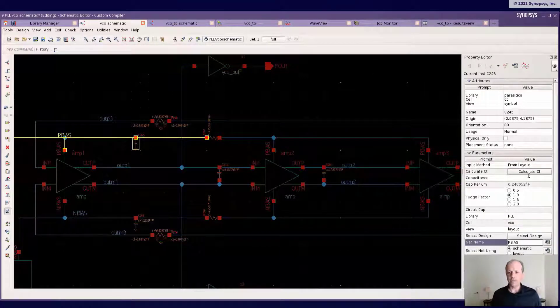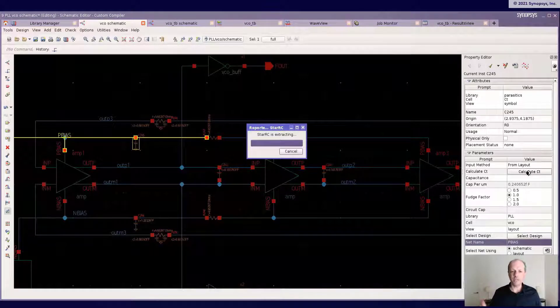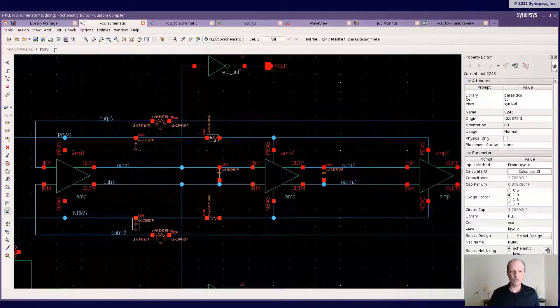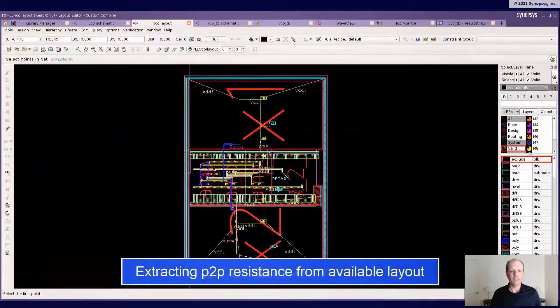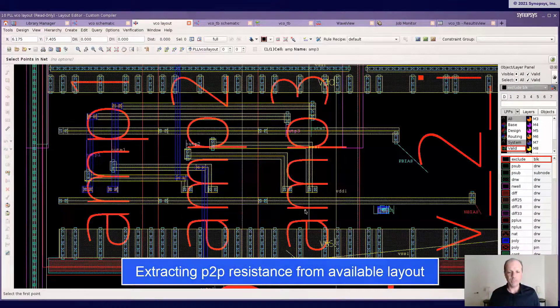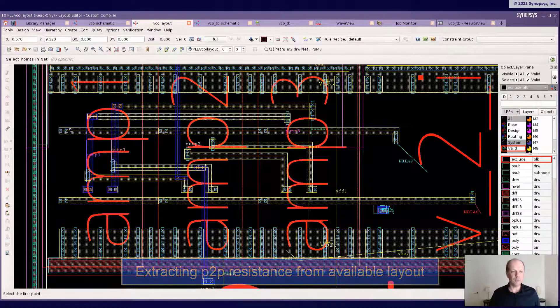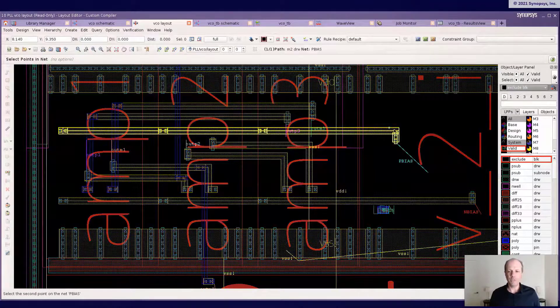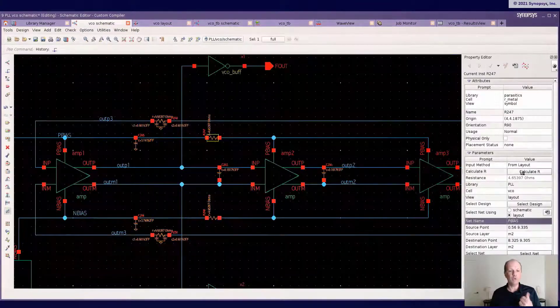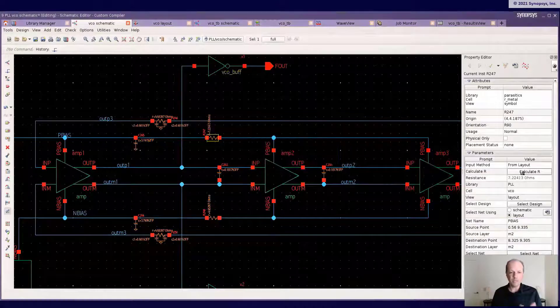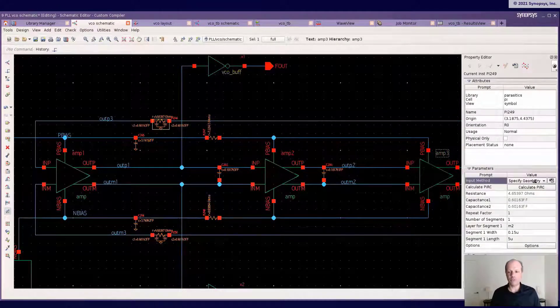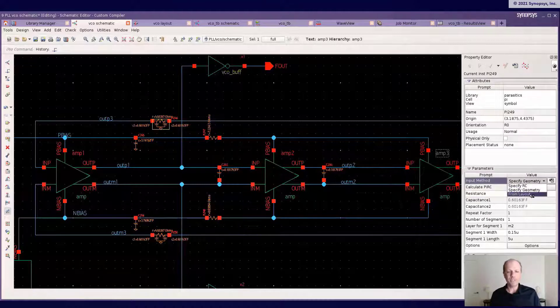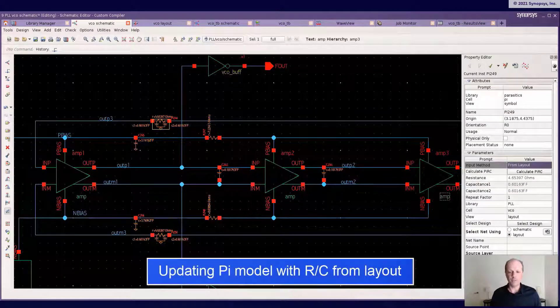Now, what we're showing here is that I've actually made progress in my layout. And so I make use of the layout that's being implemented for some of these key nets, whether I'm using the capacitance to update the value, or whether I'm going to the layout to have a better handle as to which point I'm taking into account for the resistance calculation.